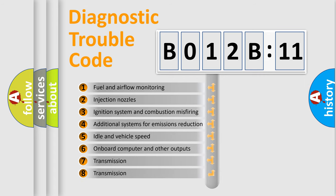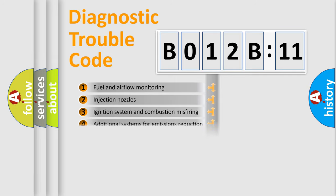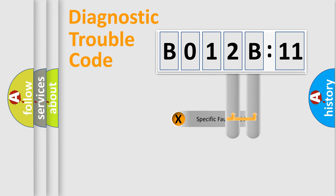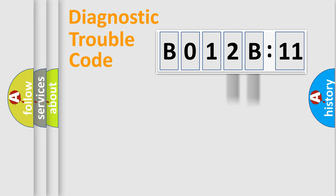The third character specifies a subset of errors. The distribution shown is valid only for the standardized DTC code. Only the last two characters define the specific fault within the group.